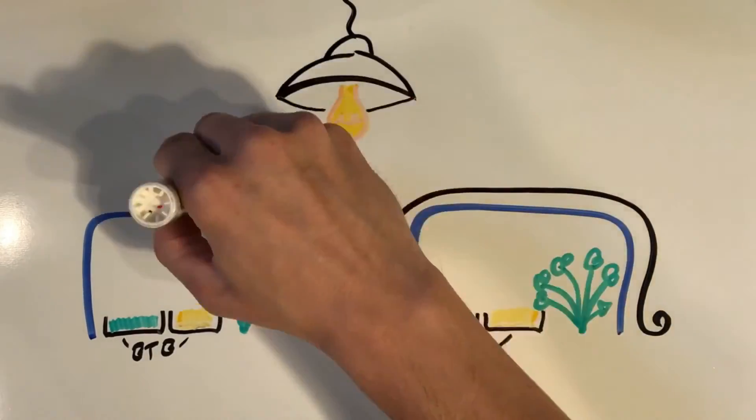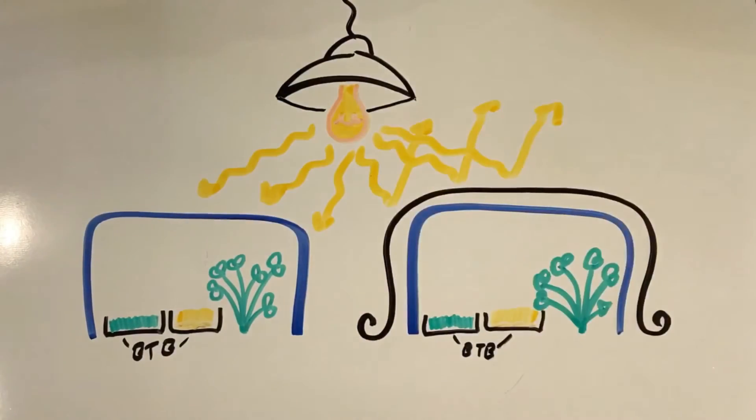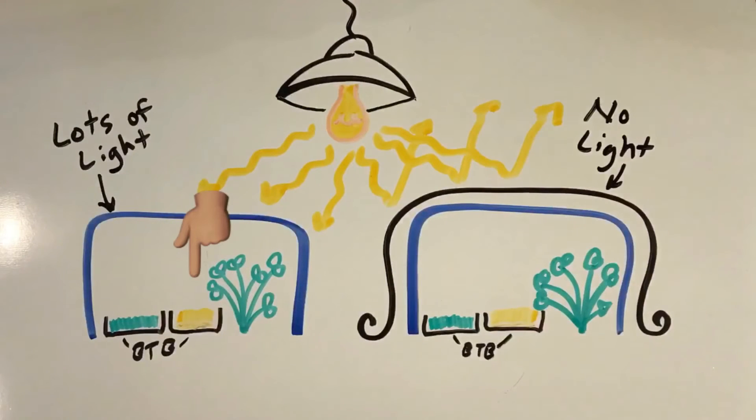This is a sketch of our experimental setup. On one side, the plants received lots of light, while on the other they received no light. The BTB in the light changed from yellow to greenish. That indicates that CO2 came out of the BTB. But where did it go? Well, the only thing in the container besides BTB was the plants, so it looks like the plants in the light were absorbing CO2.